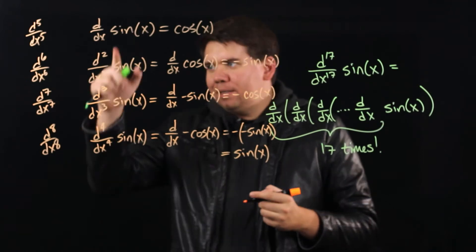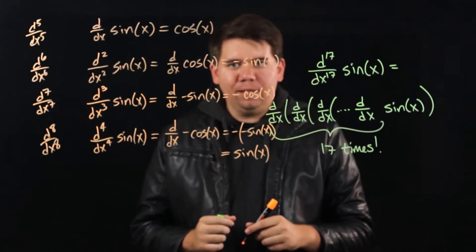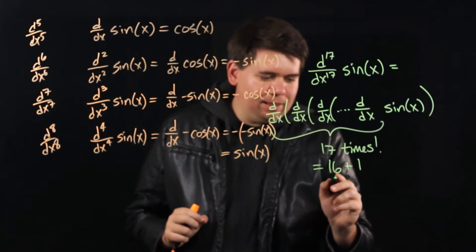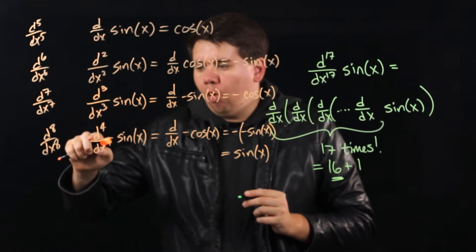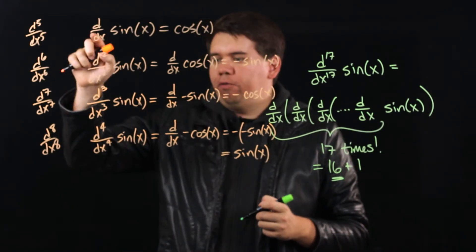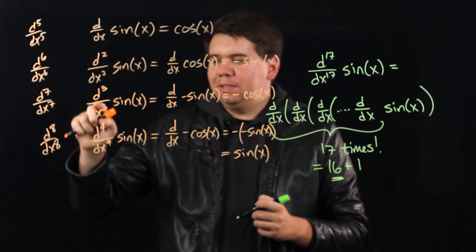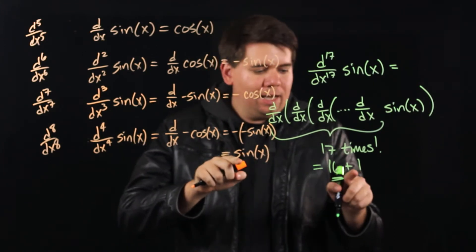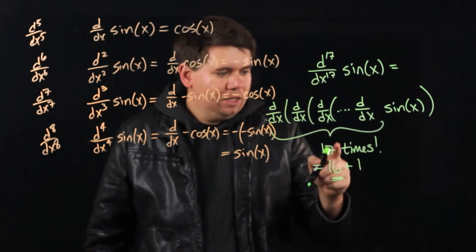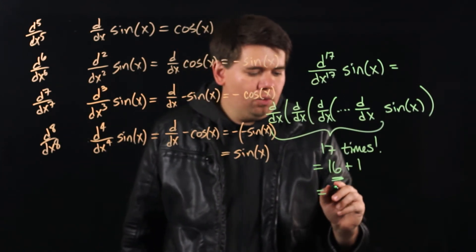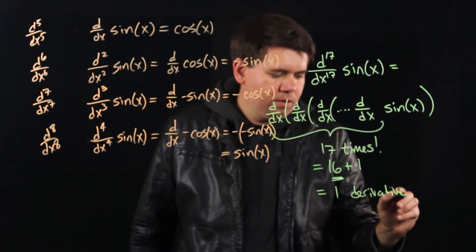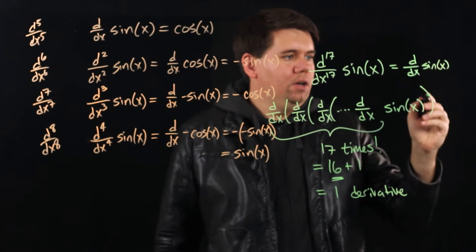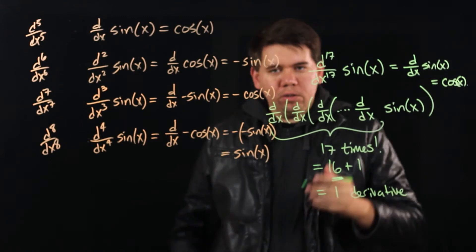So how do we get up to 17? We can think of 17 as 16 plus 1. If I take 16 derivatives, each group of 4 gets me back to the beginning — back to sine. So the 4th, 8th, 12th, and 16th derivatives all return to sine of x. For the 17th derivative, I go through the loop 16 times getting back to the beginning, then take one more derivative. So 17 derivatives is equivalent to just one derivative. The 17th derivative of sine of x is the same as the first derivative, which is cosine of x.